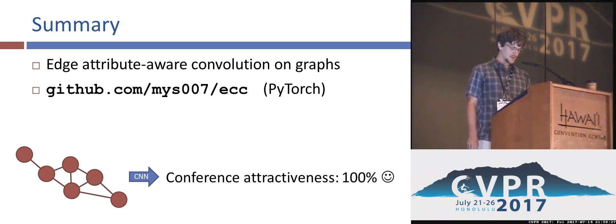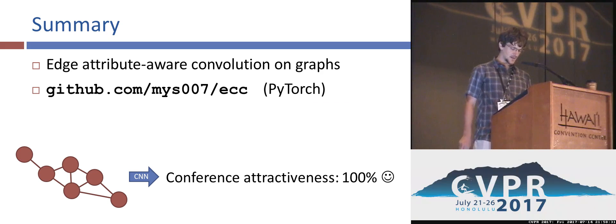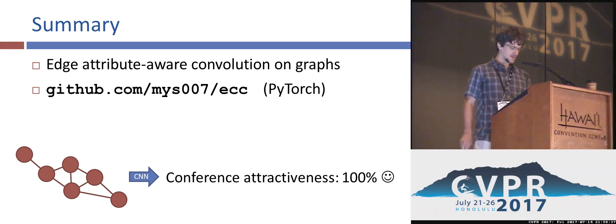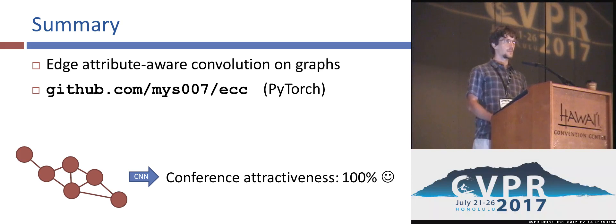Our message is that using edge information in graph convolutions can be very helpful and allow for a new range of applications. For instance, regressing Hawaii to be a great place to hold a conference. The source code in PyTorch is available online. Thank you.